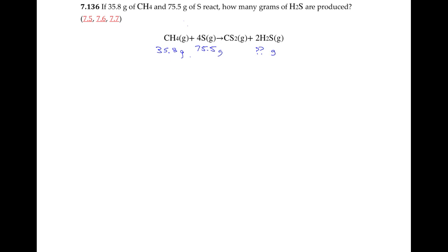The only way to solve this is to look at the number of moles of each reactant and then determine how many grams of hydrogen sulfide you could produce in each case. Whichever one gives us the lowest amount of hydrogen sulfide that could be produced — that will be the limiting reactant, the one that's going to limit the amount of hydrogen sulfide we can produce.